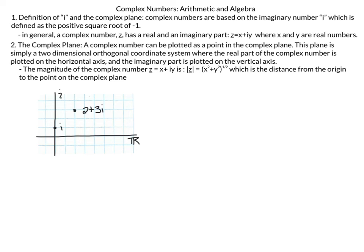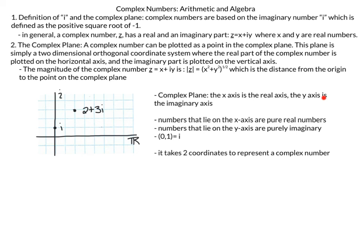The x-axis is the real axis and the y-axis is the imaginary axis. Numbers that lie on the x-axis are pure real numbers because the imaginary component is zero. Numbers on the y-axis are purely imaginary — for example, the coordinate (0, 1) equals i. Importantly, it takes two coordinates to represent a complex number, so it takes an entire plane to represent complex numbers, unlike real numbers which only need one axis. This will become significant when we try to do things like integration.